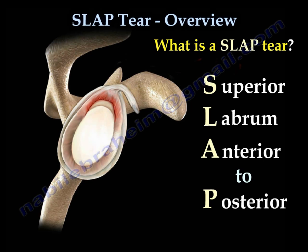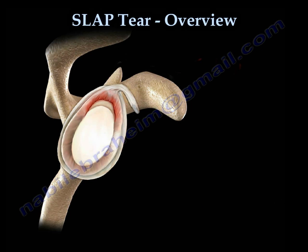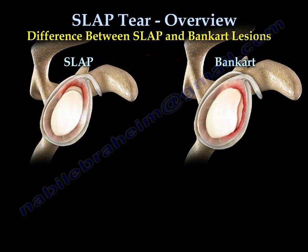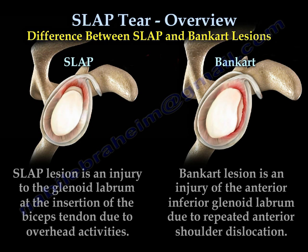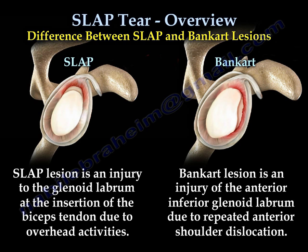It is important to know the difference between a SLAP lesion and a Bankart lesion. A SLAP lesion is an injury to the glenoid labrum at the insertion of the biceps tendon due to overhead activities. A Bankart lesion is an injury of the anterior inferior glenoid labrum due to repeated anterior shoulder dislocation.